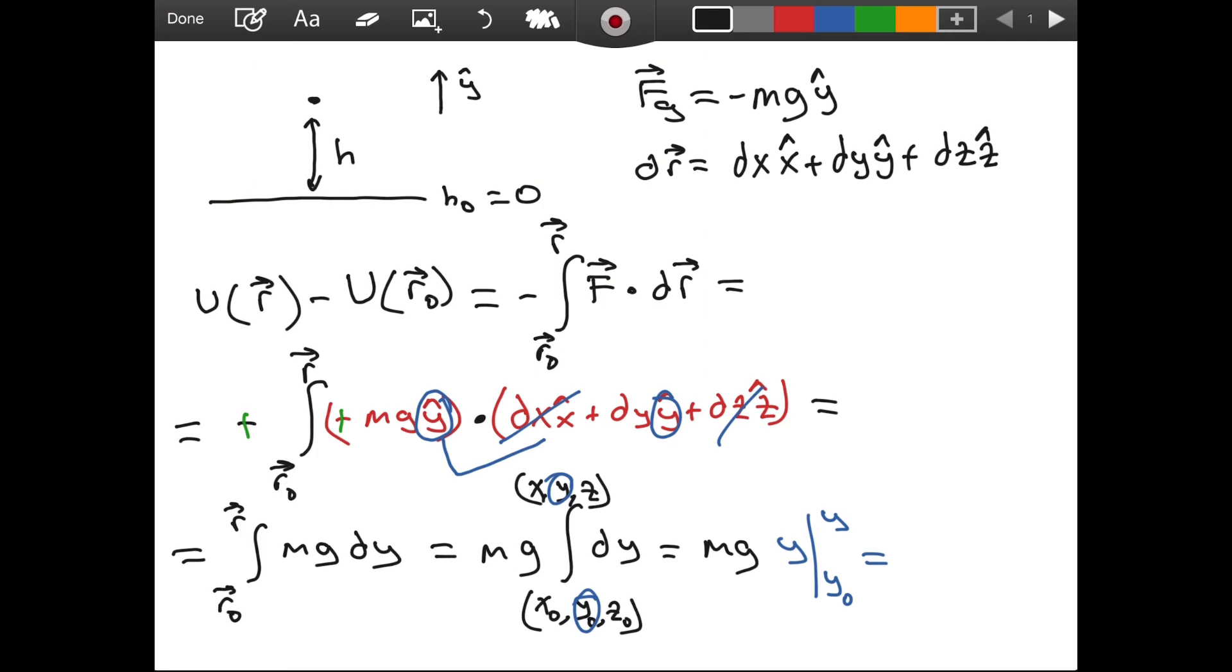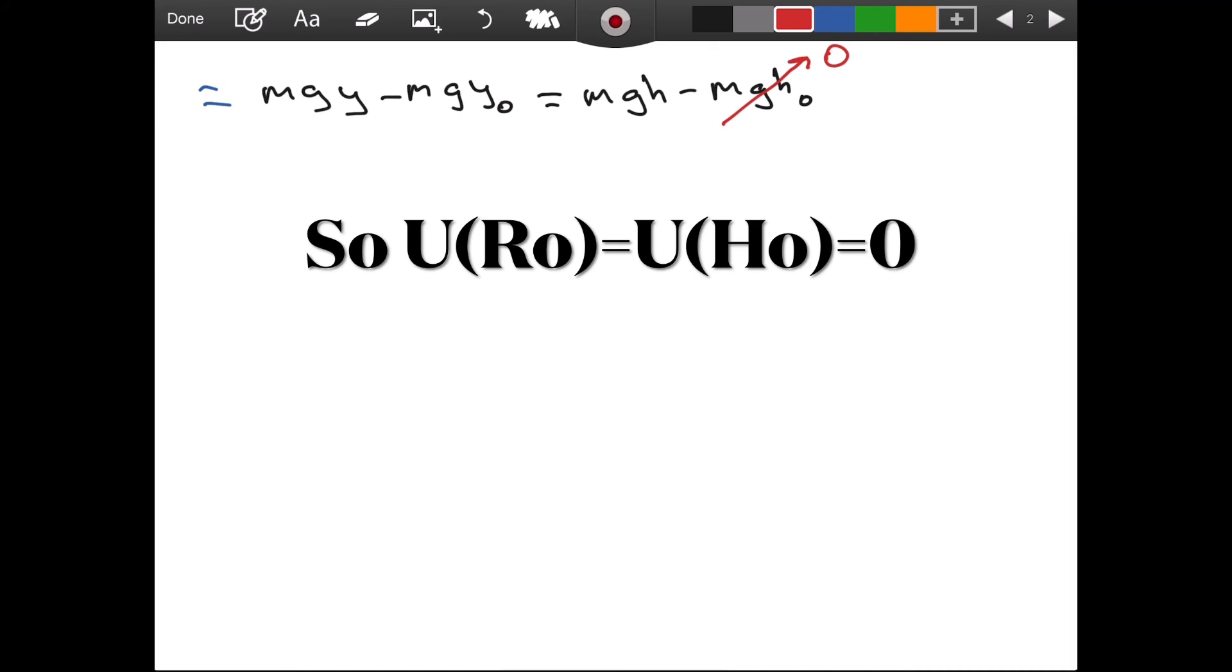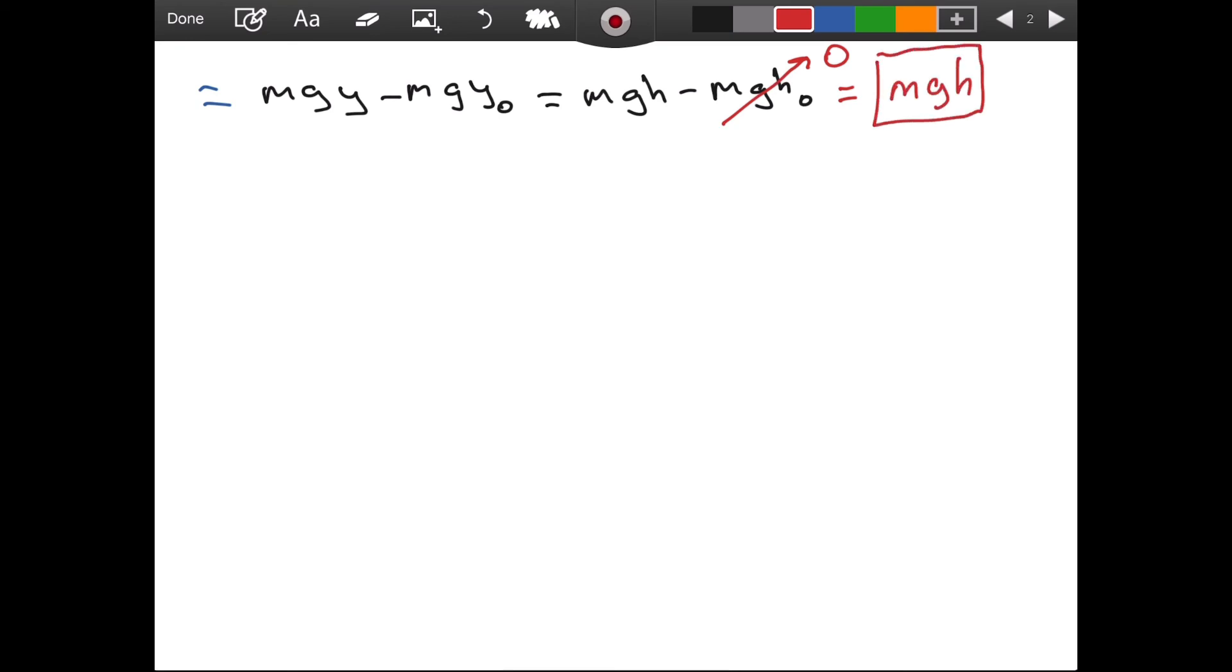So we just at the beginning set h naught as 0, which means this cancels. And this makes sense that we set h naught as equal to 0 because oftentimes we take the ground level or the sea level as height 0. So that is practical. And you get mg h, which is a very famous equation for the gravitational potential energy at height equals h.